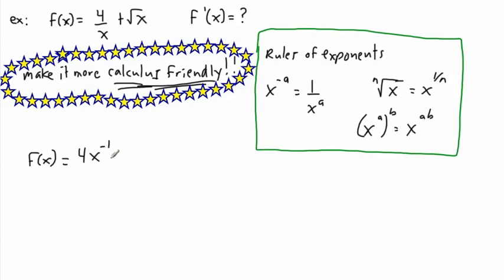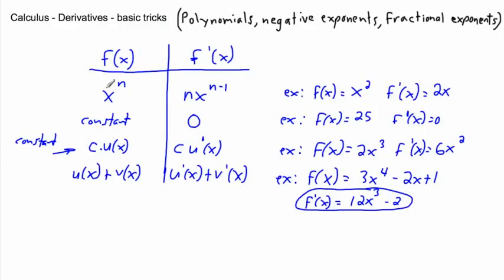And plus square root of x — there's an implied little 2 here, it's the second root of x. The nth root of x is the same thing as x to the power of 1 over n, so in this case it'll be x to the power of 1 over 2. Now this is more calculus friendly. It may look ugly, but it's way easier to use the calculus trick: the derivative of x to the n equals n times x to the power of n minus 1.